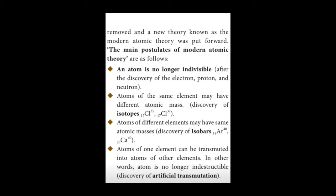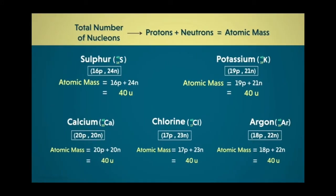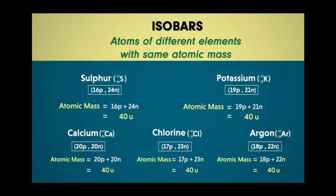The third postulate is atoms of different elements may have the same atomic masses. Let's take five different elements: sulfur, potassium, calcium, chlorine and argon. In each case, the number of protons and neutrons is different. However, the total number of nucleons sums up to 40. The total number of nucleons is the sum of protons plus neutrons. And you know what an isobar is — atoms of different elements with the same atomic mass.